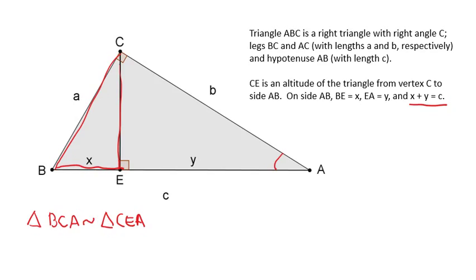Similarly, let's look at the smaller triangle BEC. BEC contains a right angle, as does the whole triangle ABC, and each of those triangles contains angle B. So we also know that triangle BCA is similar to triangle BEC.